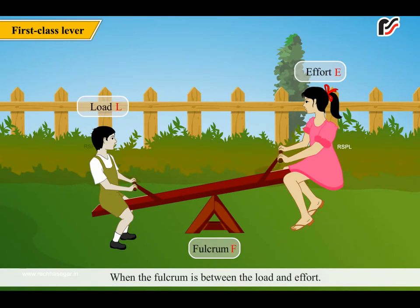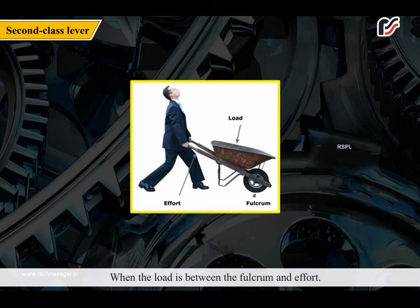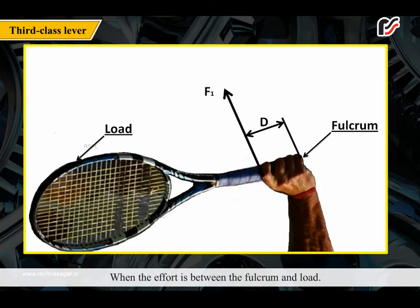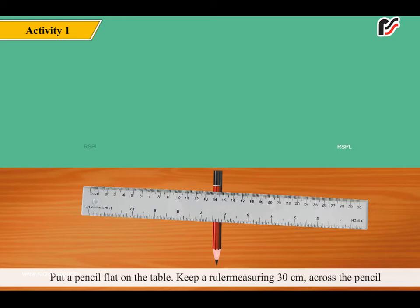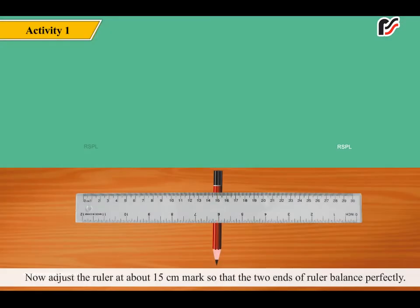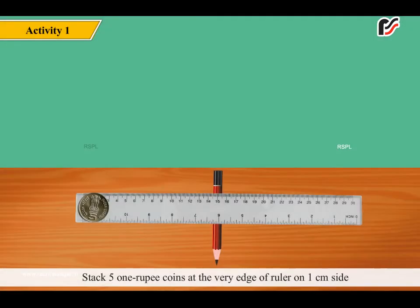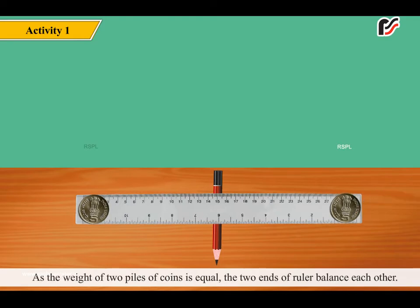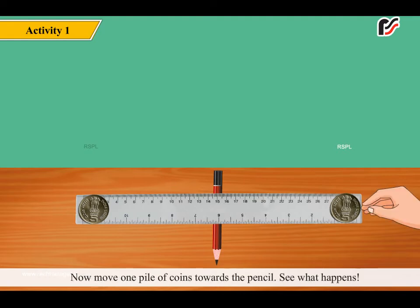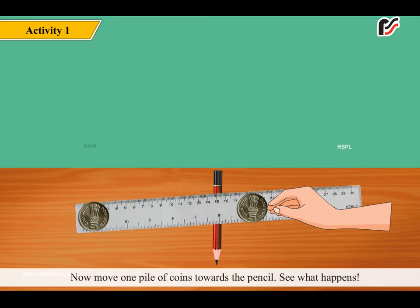Class 1: when the fulcrum is between the load and effort. Class 2: when the load is between the fulcrum and effort. Class 3: when the effort is between the fulcrum and load. Activity: Put a pencil flat on the table. Keep a ruler (30 cm) across the pencil so that the ruler's two ends teeter back and forth like a seesaw. Adjust the ruler at about 15 cm so the two ends balance perfectly. Stack 5 one-rupee coins at each end. Since the weight of the two piles is equal, the two ends balance each other. Now move one pile of coins towards the pencil and observe what happens.